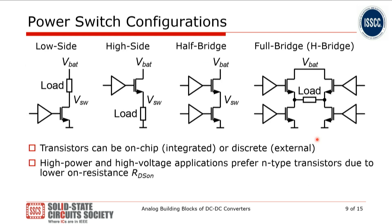The power stage formed from these power transistors can be found in switch-mode DC-DC converters in four configurations. The first is a low-side configuration, where the power transistor is at the low side and the load connects to the battery voltage. The opposite is the high-side switch, and combining both gives a half bridge. Two half-bridge configurations form a full bridge, sometimes called an H-bridge. When voltages and power levels go up, N-type transistors are preferred as they allow lower on-resistances and require less layout area.